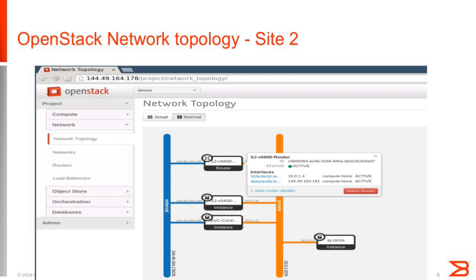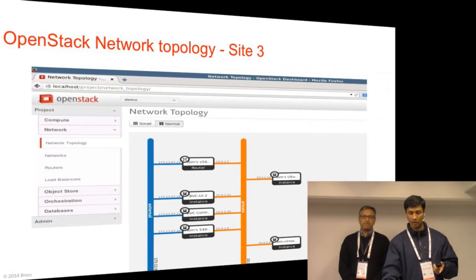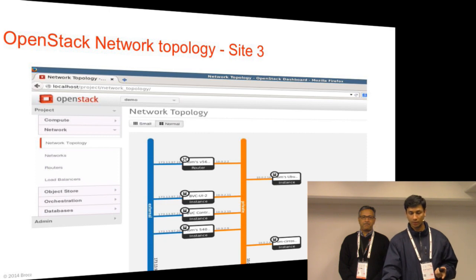Site two has a very similar configuration: we have a 5600 as a neutron router, a 5400 as an instance, and a controller acting as part of the cluster, with a private network with VMs. This site is in San Jose. The third site is located in New Hampshire, with a very similar structure — a 5600 router acting as neutron router, UI, controller, and 5400 VMs, and on the private network some Ubuntu VMs acting as traffic generators or receivers.